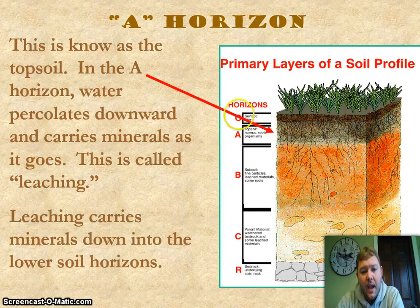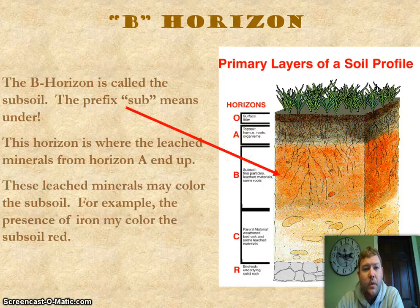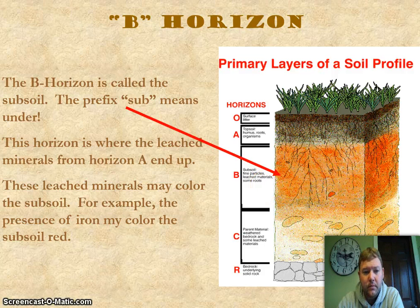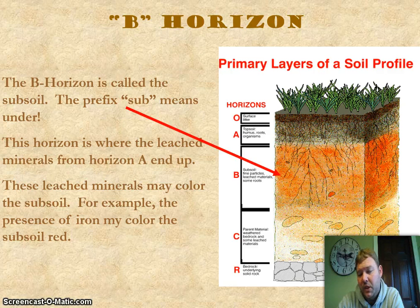Underneath the A horizon is the B horizon, called the subsoil — the prefix sub means under. This is where the leached minerals from horizon A end up. These leached minerals may color the subsoil; for example, the presence of iron might make it look reddish orange.